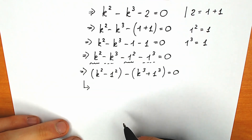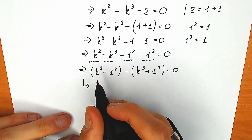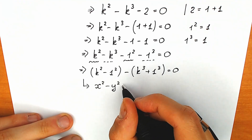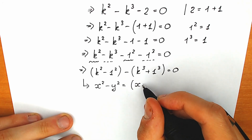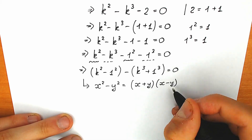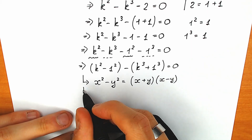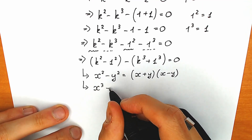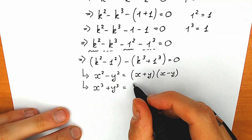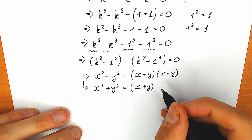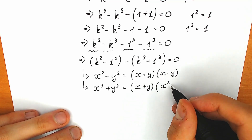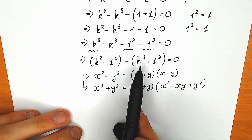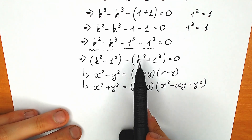Now we need to know two formulas. The first one is the difference of squares: x squared minus y squared equals (x plus y)(x minus y). And the second one is the sum of two cubes: x cubed plus y cubed equals (x plus y)(x squared minus xy plus y squared). Now that we know these, let's apply both formulas.